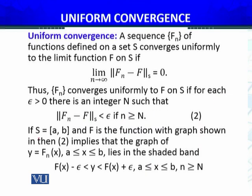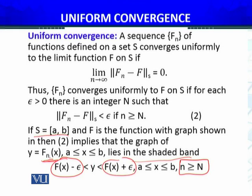Let's see this mathematically. If S = [a,b] and F is the function with graph shown, then uniform convergence implies that the graph of y = F_n(x), where n is the number I just explained, always lies in the shaded band—the epsilon tube with lower bound F(x) - ε and upper bound F(x) + ε. The graph of F_n(x) whenever n ≥ N will always remain within these two boundaries.